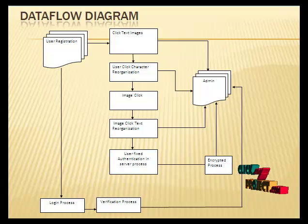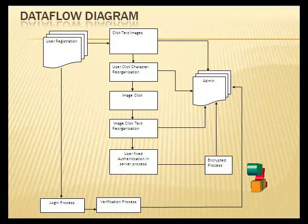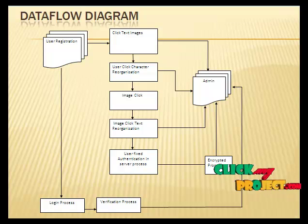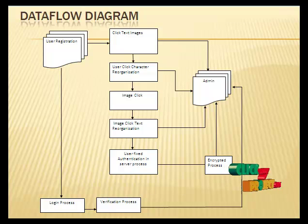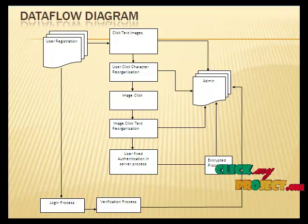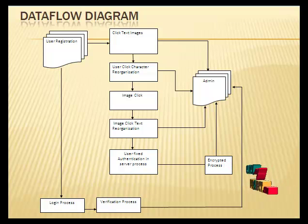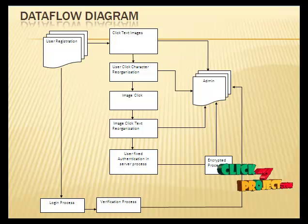The authentication server relies on the ground truth to identify the character corresponding to the user's clicked point. In click-text images, characters can be arranged randomly. When entering a password, the user clicks on the image on the character in their password, in the same order. Its hash is then calculated and compared with the stored hash. Authentication succeeds only if the two hashes match.